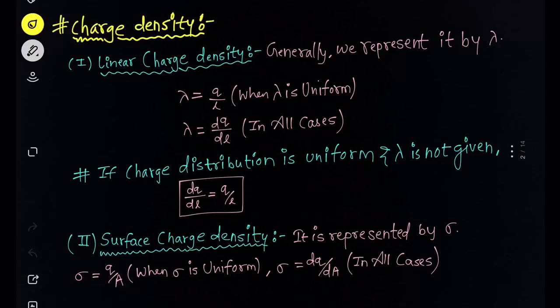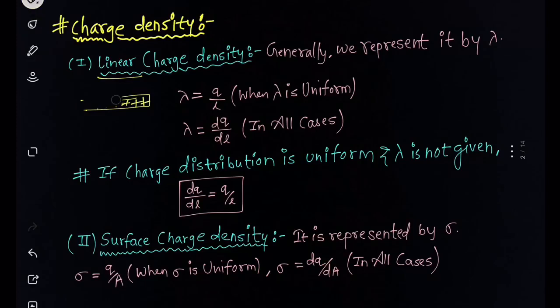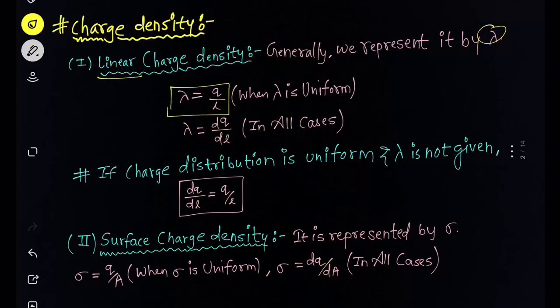We'll start with charge density. There are three kinds of charge density: linear, surface, and volume. For linear charge density, consider we have a rod along one axis only and we have distributed some charge over it. We call this kind of distribution linear charge distribution. Linear charge density is generally denoted by lambda. In most questions you will directly have lambda, which means it is a linear charge density.